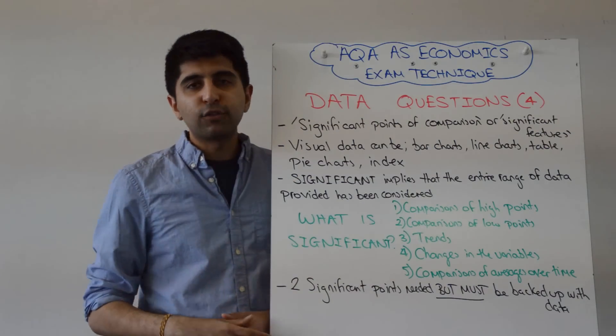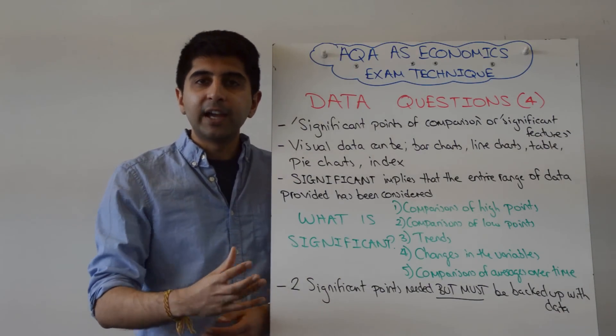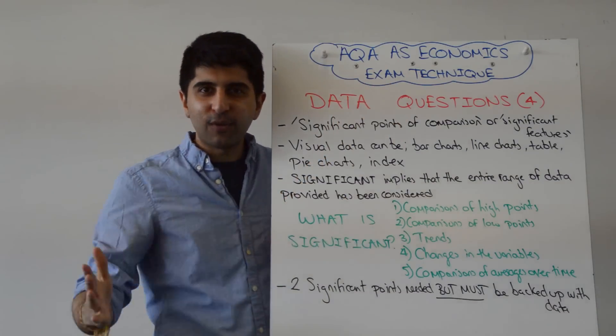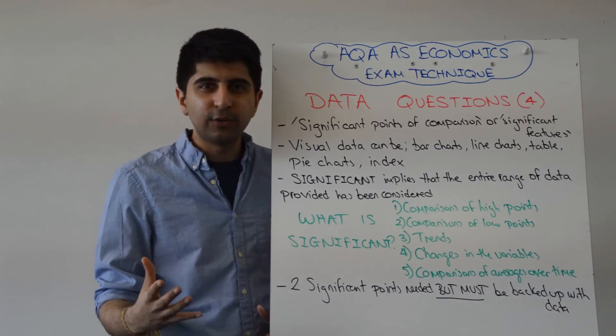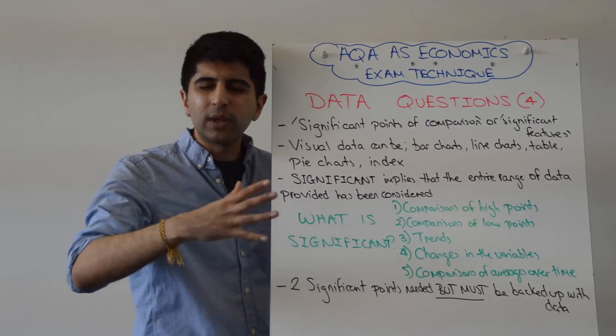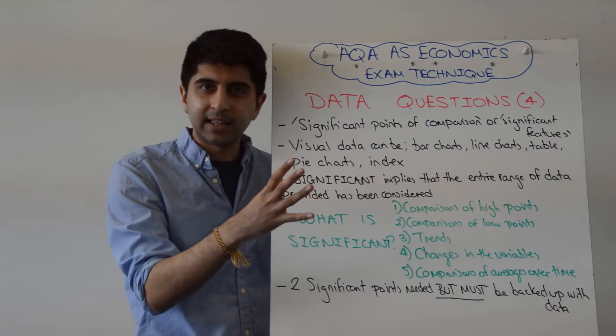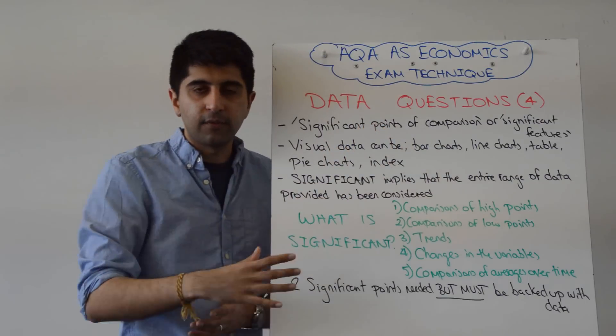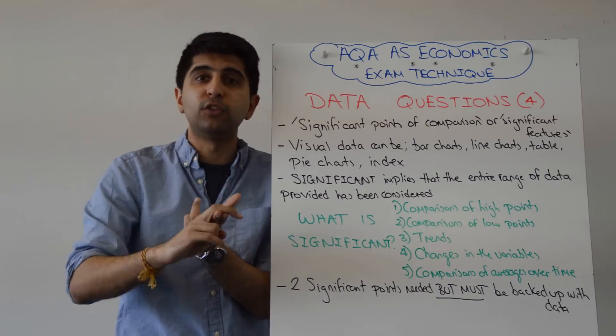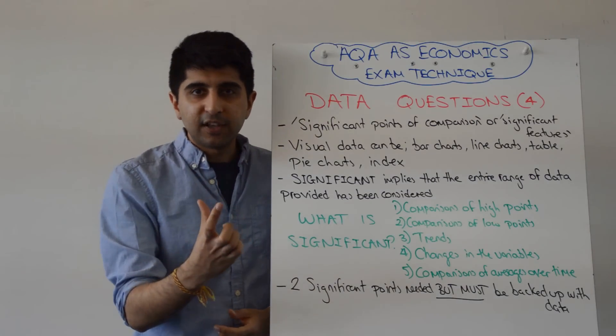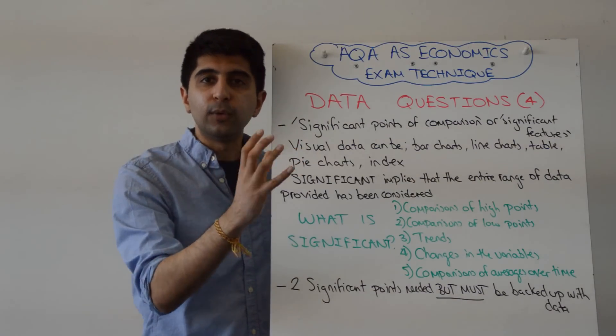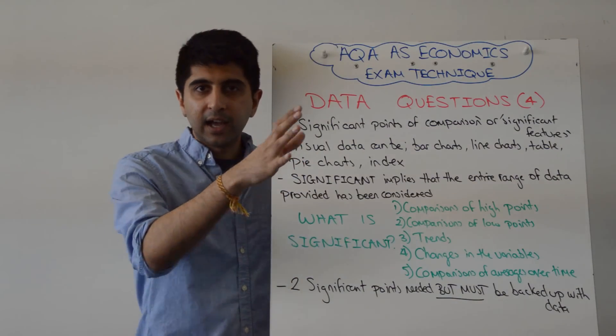If the data is from 1970 to 2015, the point you make needs to be clear that you've considered the entire range of data. You might think, how on earth do I do that? It's actually really simple. You pick any of these five points, whatever's relevant for the given data set that comes your way, and whatever the question is asking. So if it's significant points of comparison, you're looking at comparisons between two variables. If it's significant features, you've only got one variable.